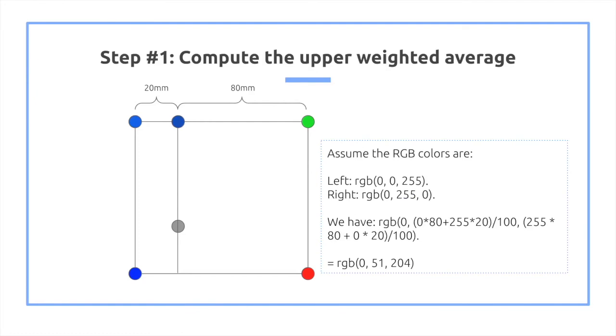If we assume that the left side RGB is 0, 0, 255, the right side RGB is 0, 255, 0. Then if we compute the weighted sum, where we just simply do, for example, 0 times 80 plus 255 times 20 divided by 100. It's a simple weighted average. We get this RGB of like this deep blue.